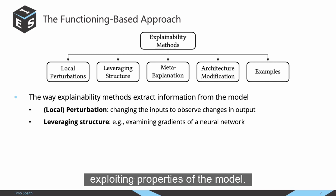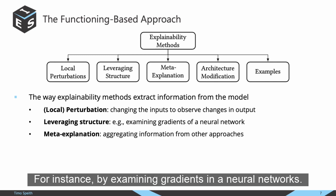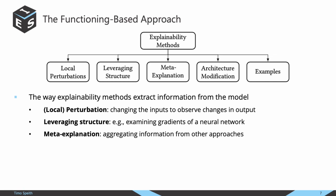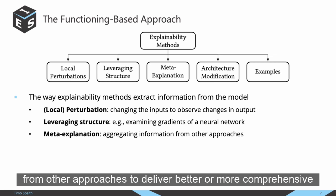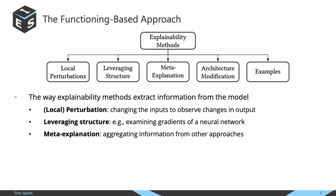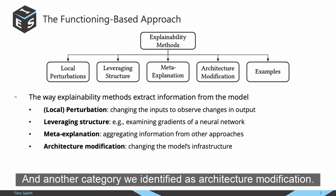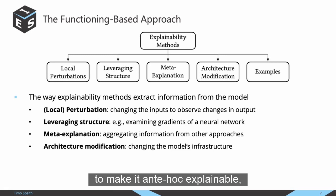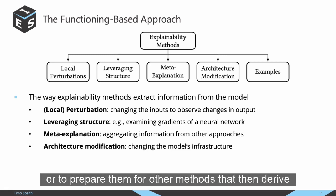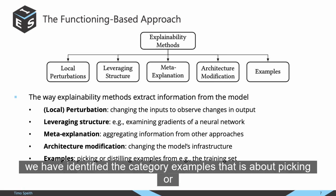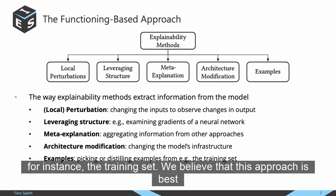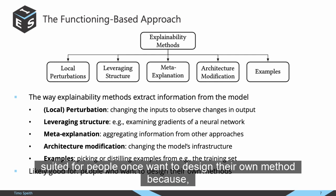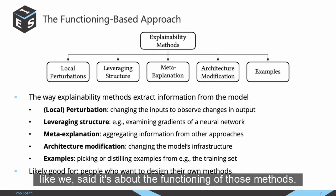We also identified the category meta-explanation, which is about aggregating information from other approaches to deliver better or more comprehensive information. Another category is architecture modification: these methods change the model's infrastructure — for instance, to make it ante-hoc explainable, or to prepare it for other methods that then derive information from the model. Finally, we identified the category examples, about picking or distilling examples from the training set. We believe this approach is best suited for people who want to design their own explainability method.